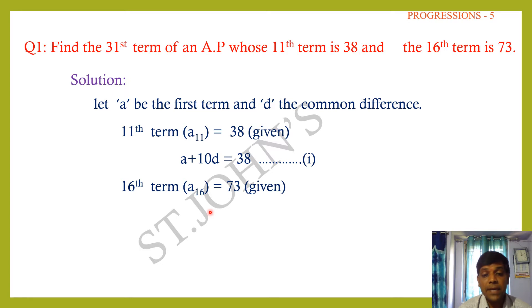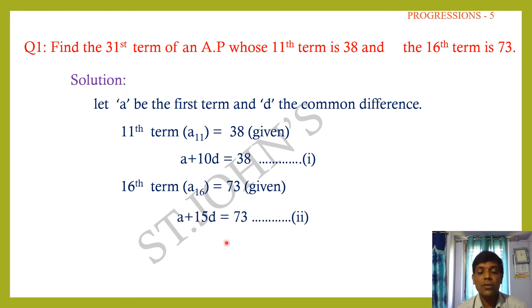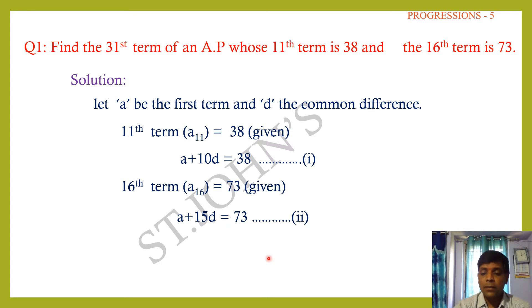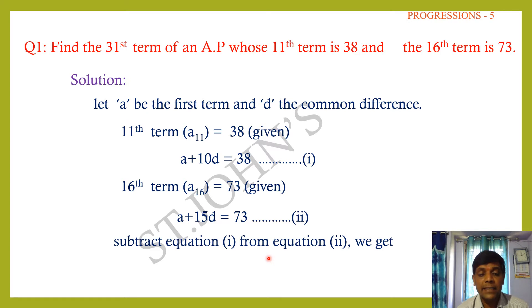So a + 15d = 73. From equations 1 and 2, subtract equation 1 from equation 2. You can subtract either way — your wish.